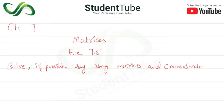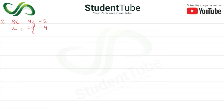Assalamualaikum, welcome to the student. In this lecture, Chapter 7, Matrix Exercise 7.5, Question 2: solve, if possible, by using matrices and Cramer's rule. The question is: 8x minus 4y is equal to 2, and x plus 2y is equal to 4.